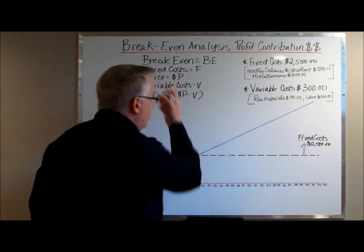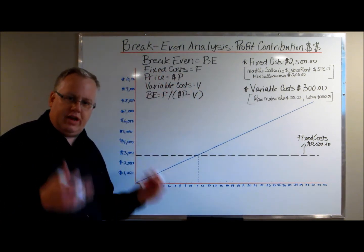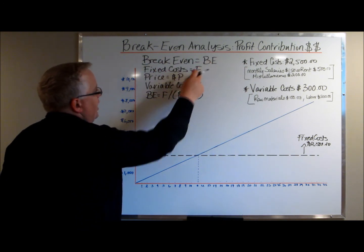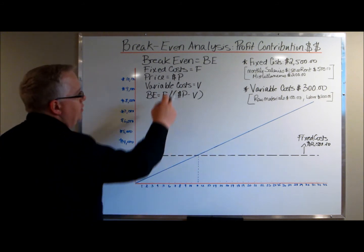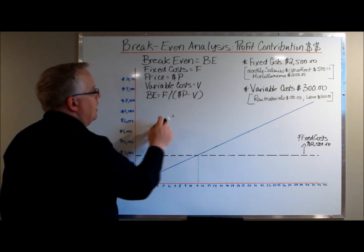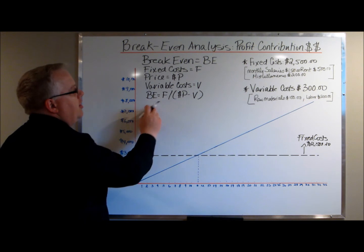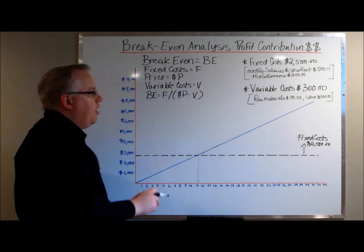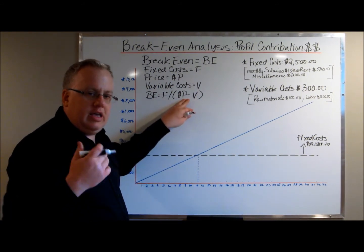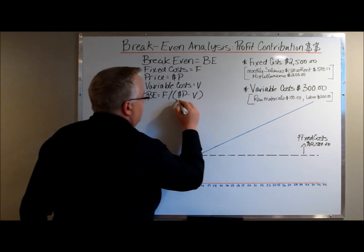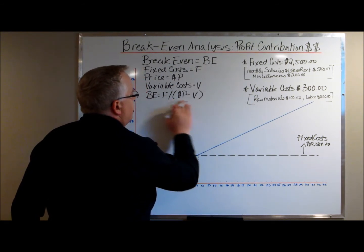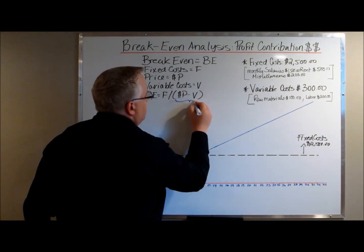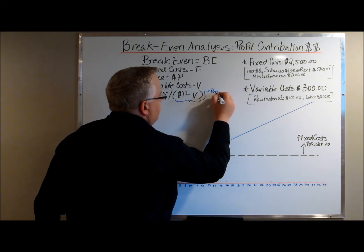Now, I'll go over the actual breakeven equation and how you perform the analysis. Breakeven equals BE. Fixed cost equals F. Price, in this case we're selling a product, equals P. Variable cost equals V. And here's the equation. Breakeven equals fixed cost divided by the price of the product minus the variable cost. And this portion, in parentheses, is the profit contribution. So, I will basically highlight that. This is the profit contribution. Price minus variable costs. And this is why I want to bring attention to this.